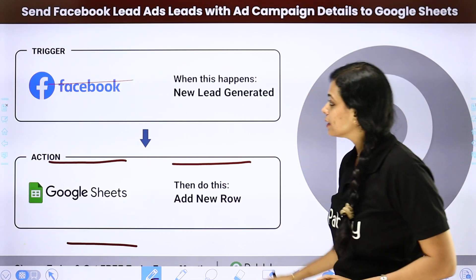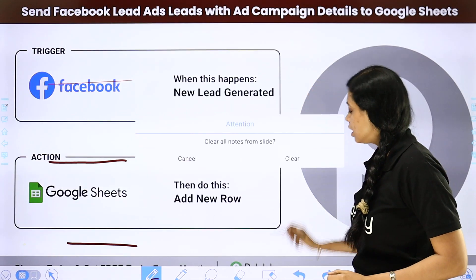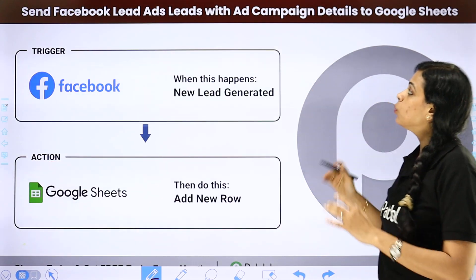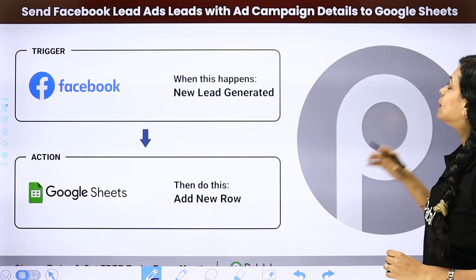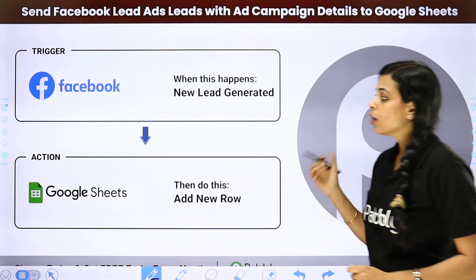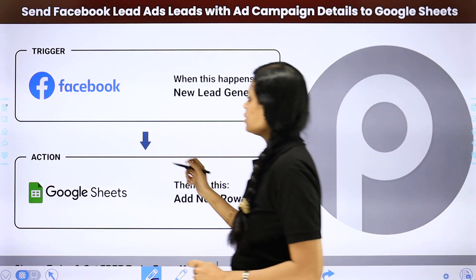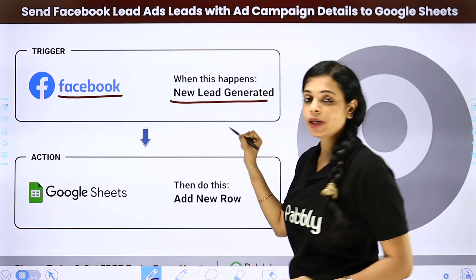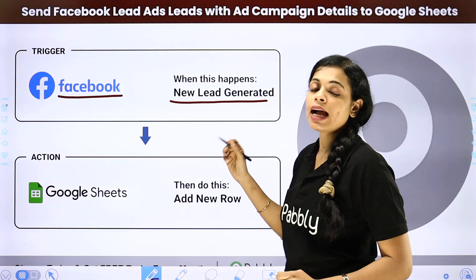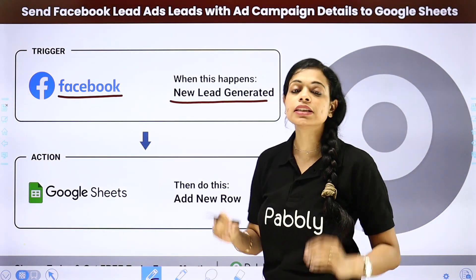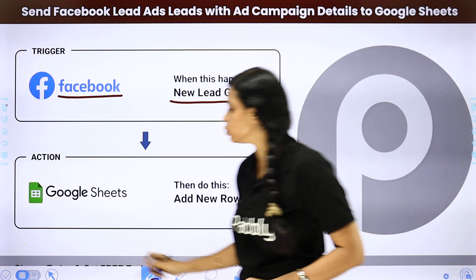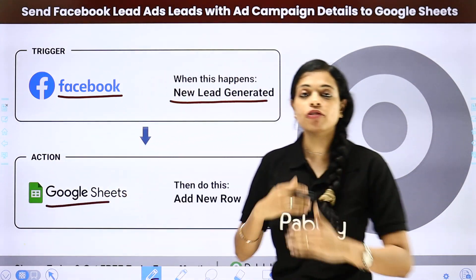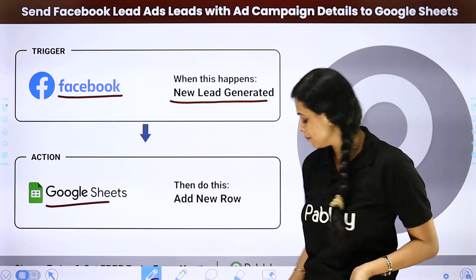Next, how to send Facebook lead ads with ad campaign details to Google Sheet. Every time a new lead is generated, the details are automatically added to your Google Sheet so that you can follow up later.